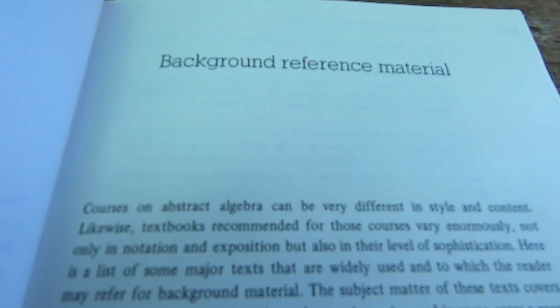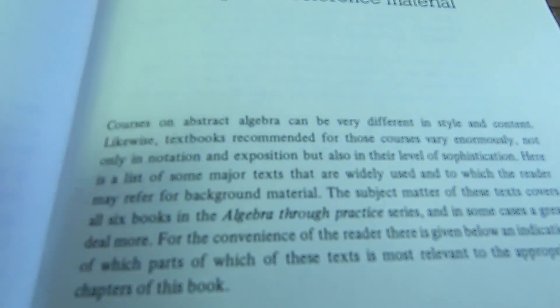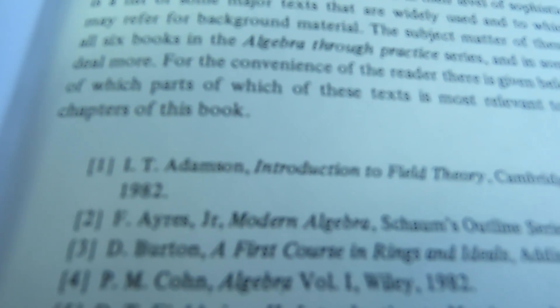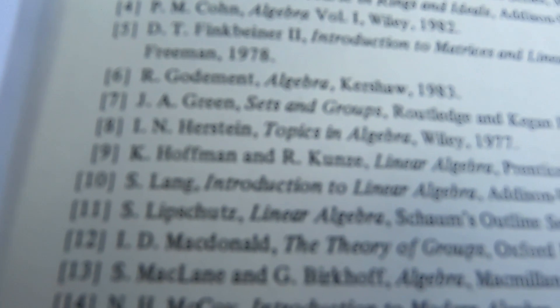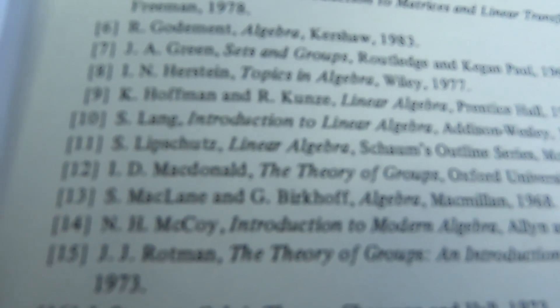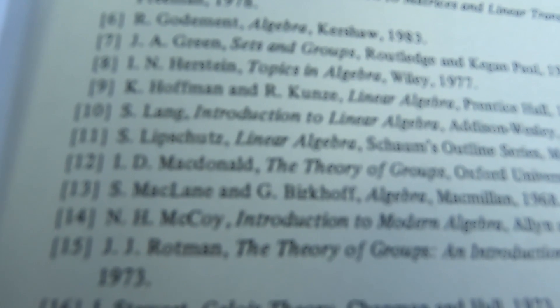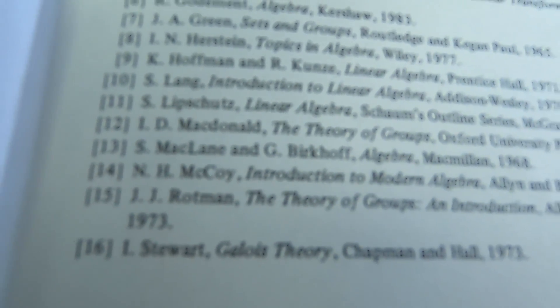This is the background reference material. So the authors just go through and give you some references. We should take a look to see if we recognize any of these books. Introduction to Field Theory, I don't recognize that one, nope, nope. Khan Algebra, I don't own that but I have a look at it. That's a good book. Hurstein, Topics in Algebra, that's another reference. Hoffman and Kunz, that's a great linear algebra book. It's a recommended reference. Lang's Linear Algebra, all kinds of stuff. McCoy, Rotman, Theory of Groups, that's a good one. So those are the books they recommend.